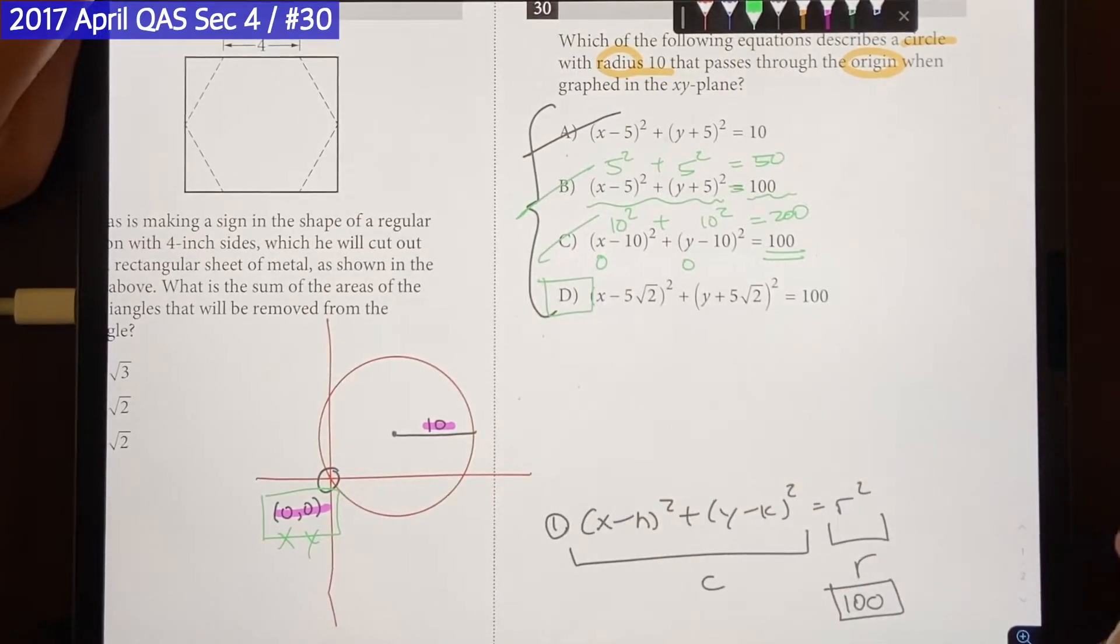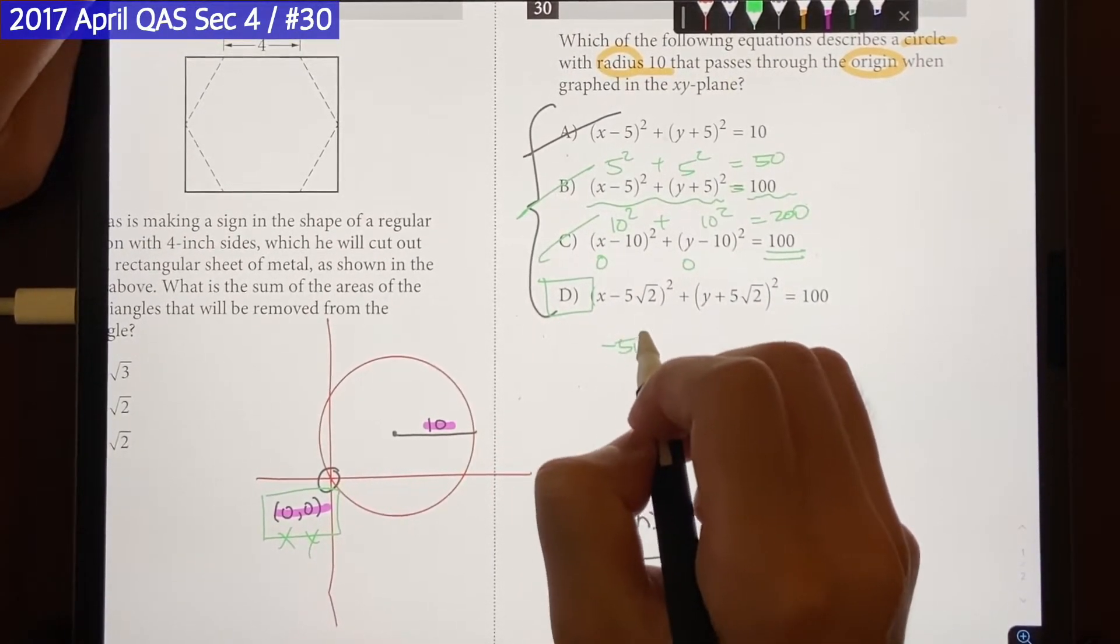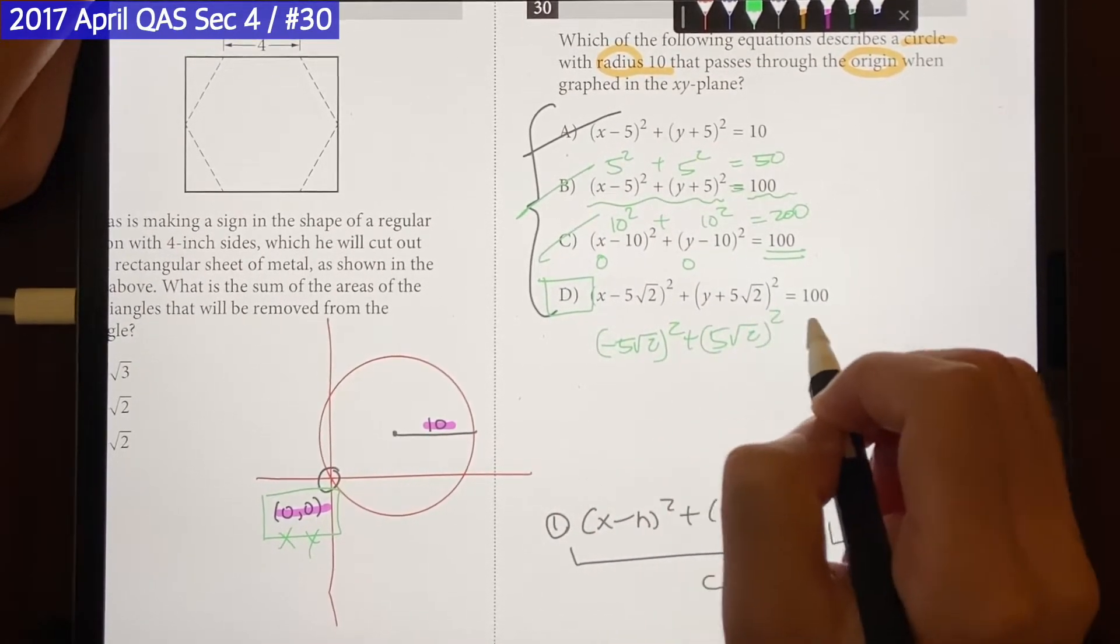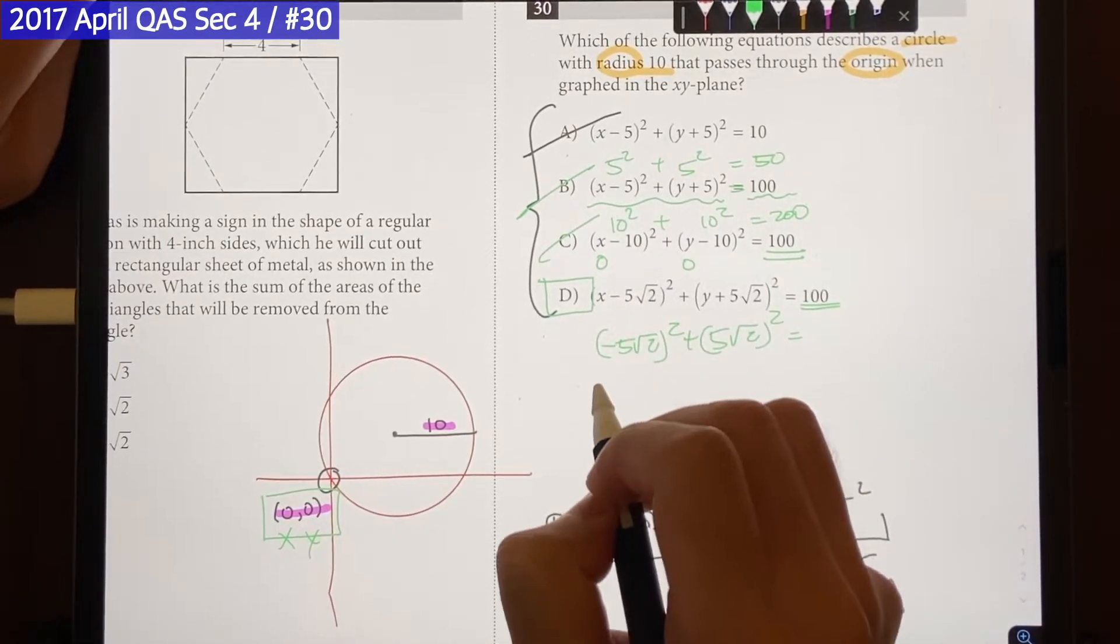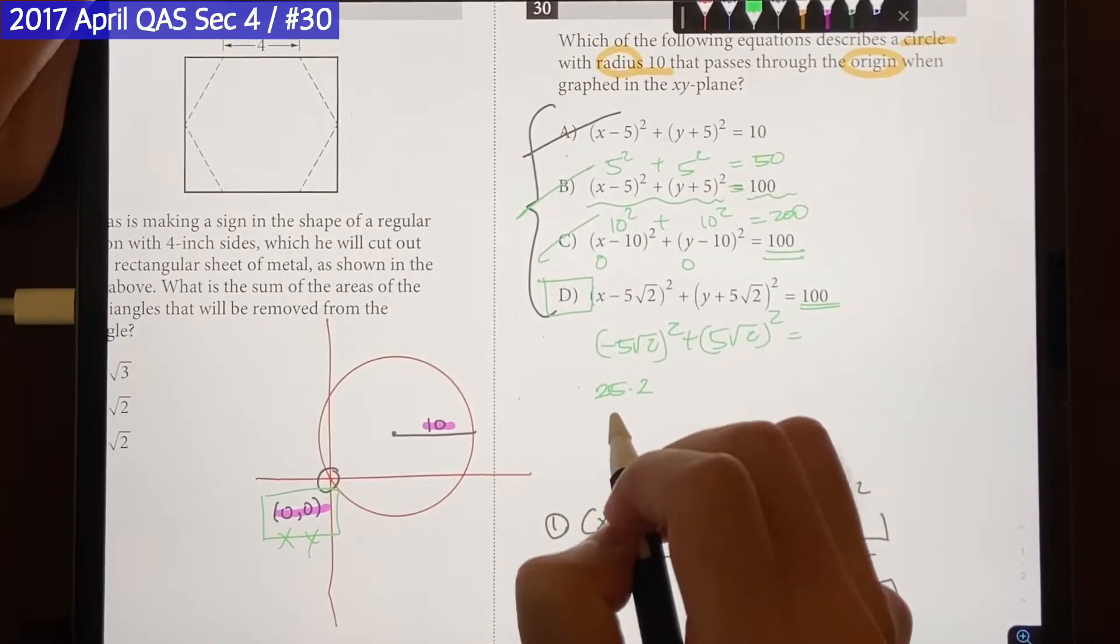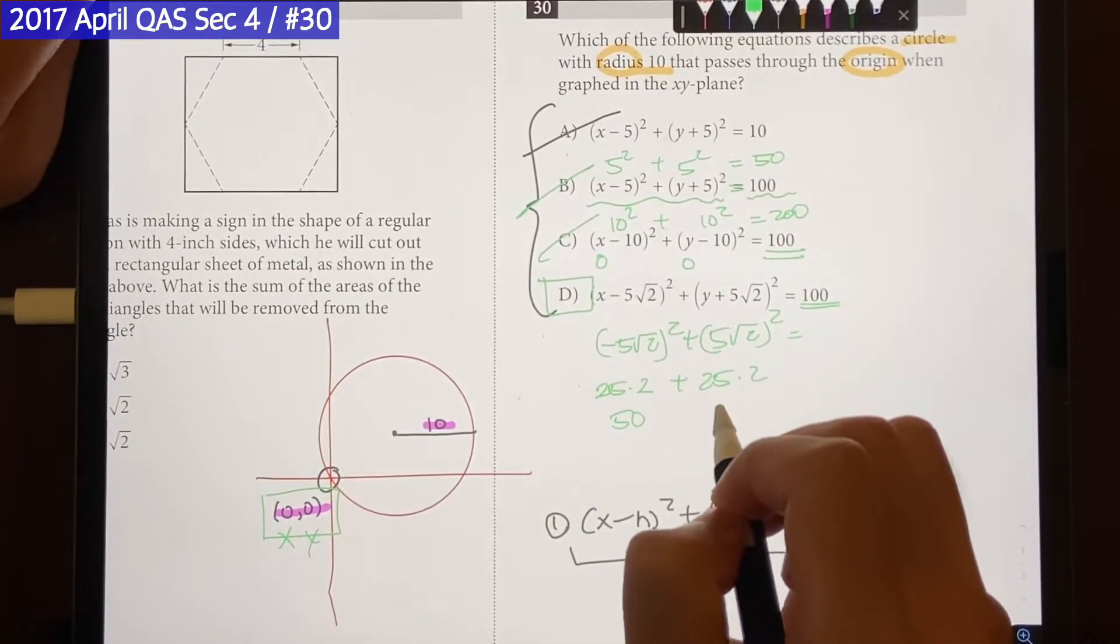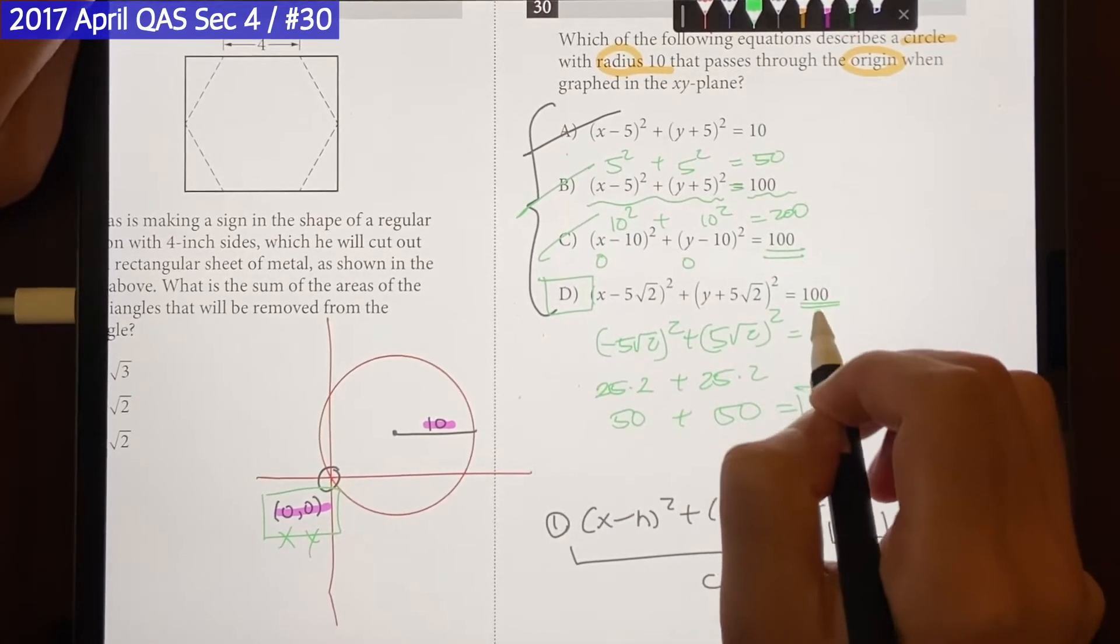And choice D should be the answer but let's plug it in just in case. If 0 goes in there you're going to get (-5√2)^2 + (5√2)^2. That should equal 100. And -5√2 squared is going to be 25 times 2 which is going to be 50 plus 25 times 2 which is going to be 50.